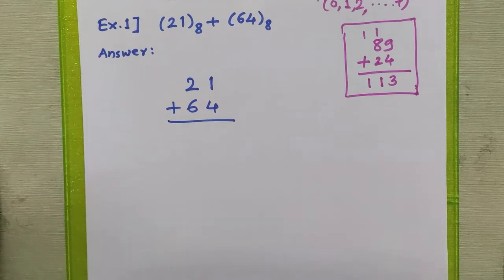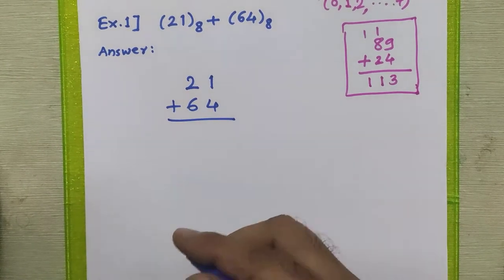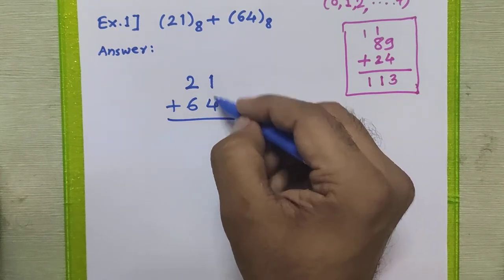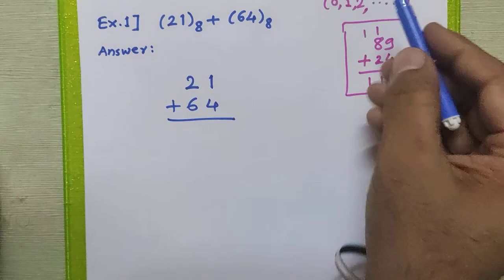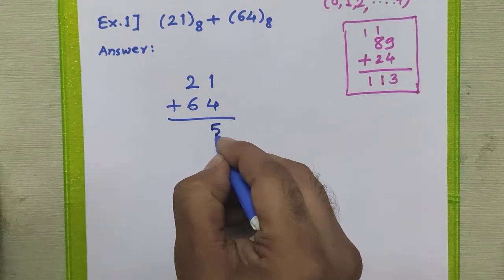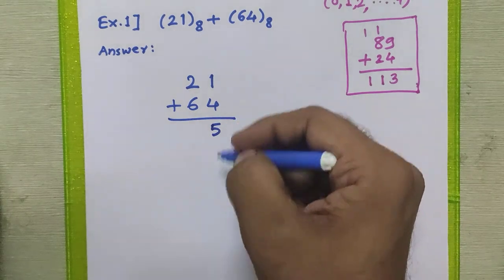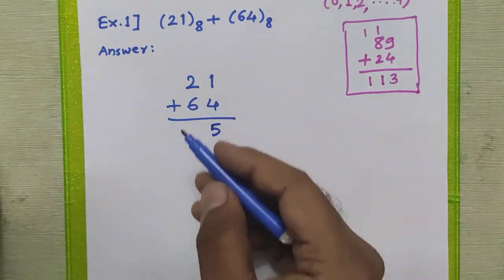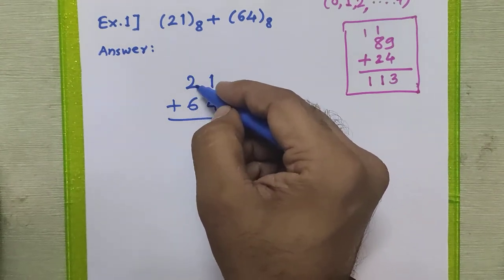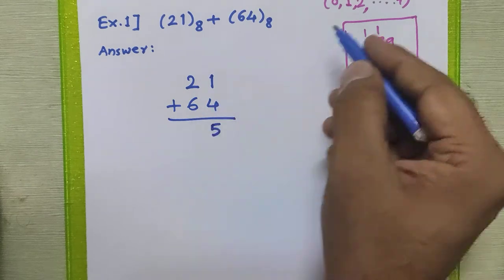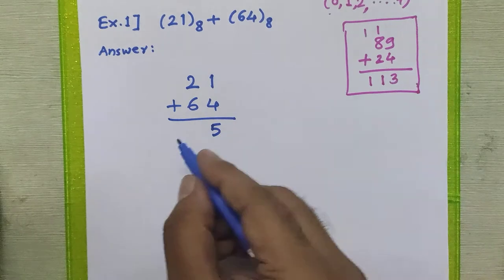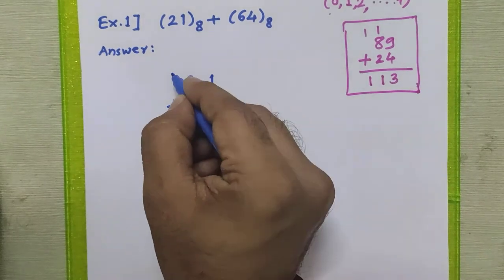How to do that — direct addition of two octal numbers without converting to any other base. First, 1 plus 4 equals 5, which is a valid octal digit, so we put 5 as it is with no carry. Now add 2 plus 6, which becomes 8, and 8 is not in the valid range — it exceeds the last valid digit — so we write 8 here and generate a carry.